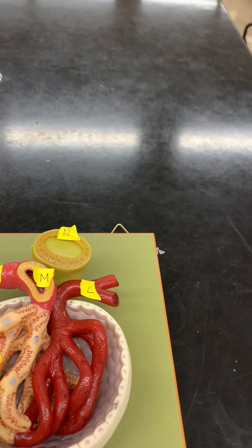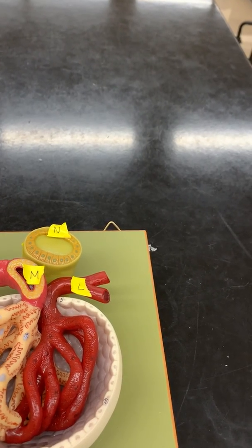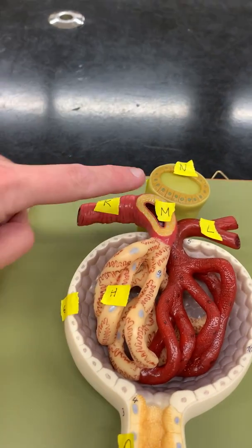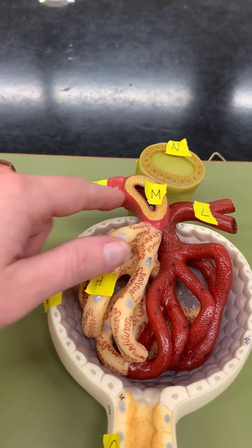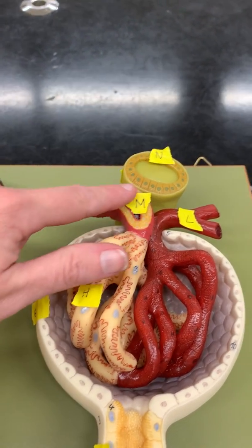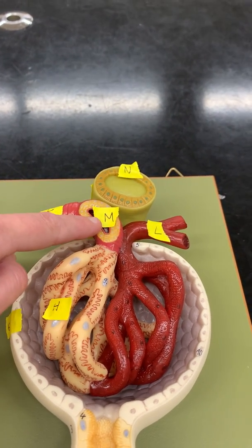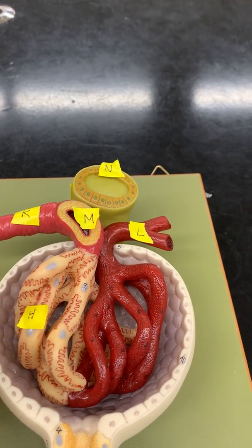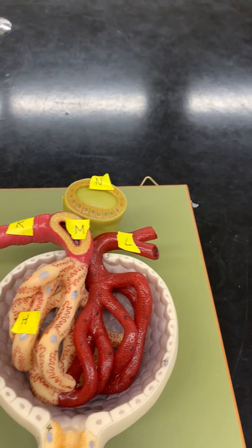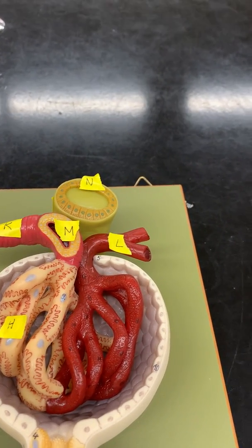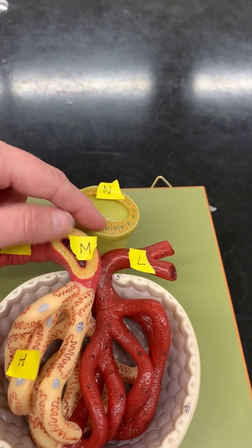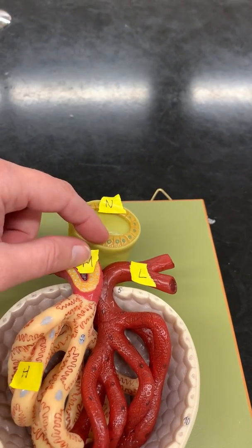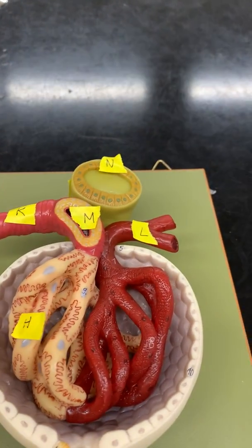Next, the juxtaglomerular cells of the afferent arteriole. That would be this here. These are the juxtaglomerular cells. So look, they're right by the glomerulus. That's how you know this is the afferent arteriole because this is broken, open. And they come in contact with the distal convoluted tubule right here, and these are the macula densa cells. So these are the things that communicate with each other to regulate the GFR.